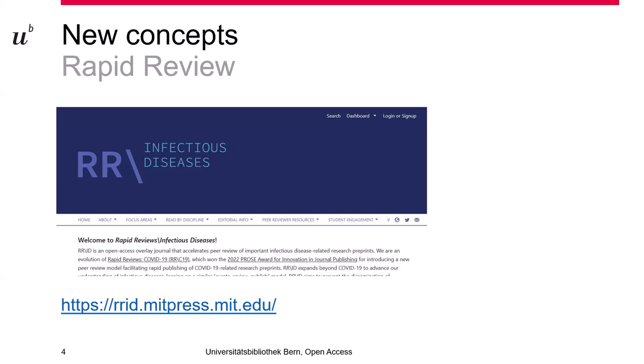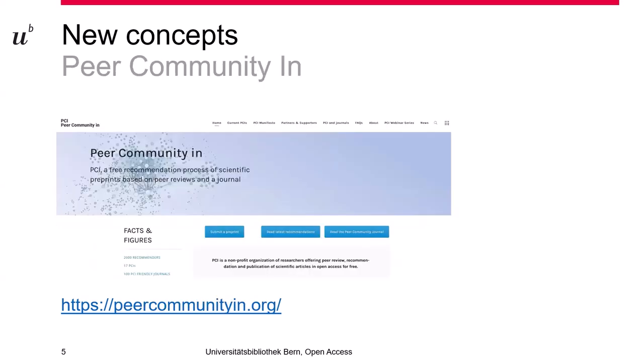So we have a new platform that provides fast and reliable scientific results in a research field where time and scientific quality are particularly important. Our next example is a very promising one. This platform provides not only journal-blind peer review of preprints but also public publication options — we're talking about Peer Community In, a PCI for a particular field of research, and there are today 17 PCIs.